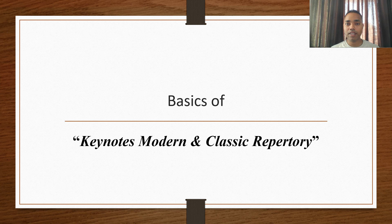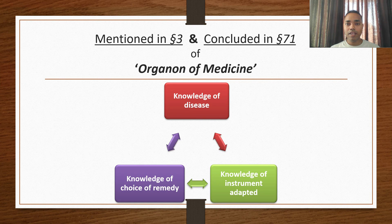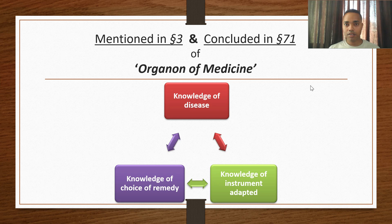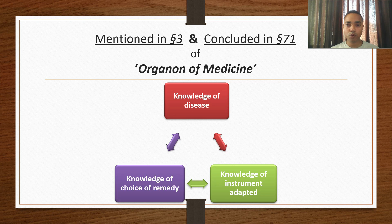Now, the basics of Keynote's Modern and Classic Repertory. In Aphorism 3, the qualification of the physician has been mentioned and concluded in Aphorism 71, where the practical part of the Organon of Medicine begins. These three parts are concluded in Aphorism 71. The first point is knowledge of disease — meaning you must have the knowledge of disease diagnosis, investigation, management, prognosis, and everything else related to the disease.